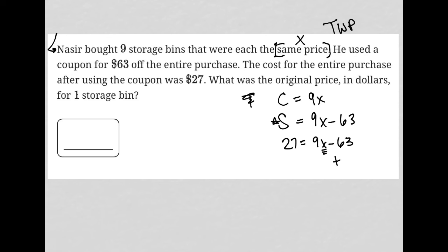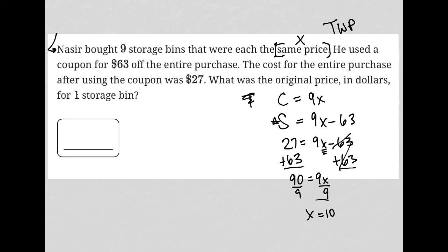All I need to do here is a bit of algebra. Combining like terms: 63 plus 27 is 90, so I have 90 equals 9x. Dividing both sides by 9, x equals 10. So the correct answer is 10.